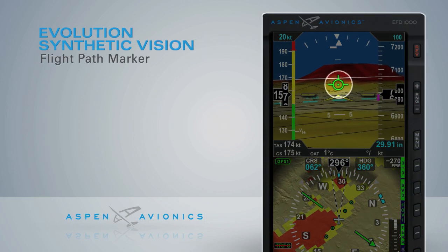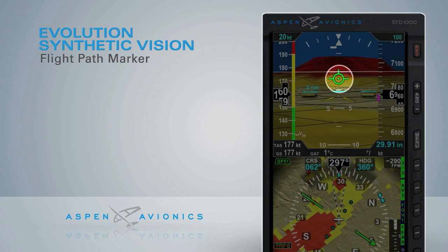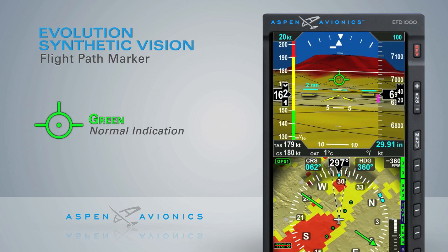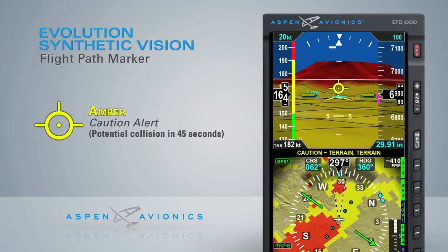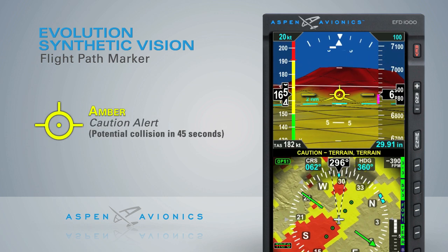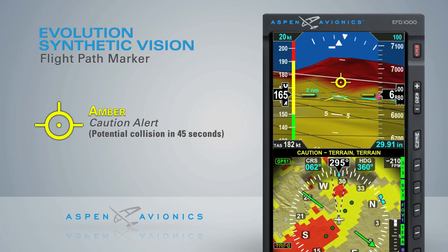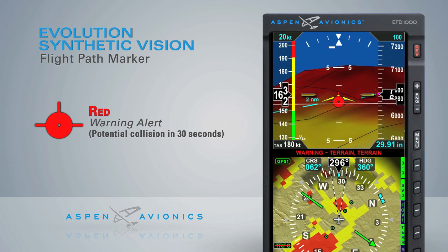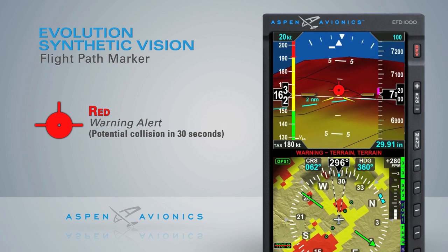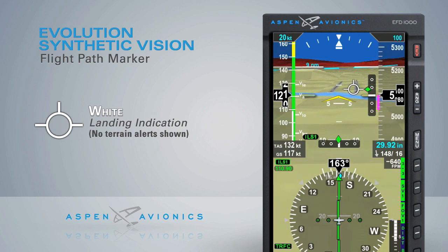The flight path marker's shape and color change to provide an immediate visual cue whenever an alert is generated. A green flight path marker is the normal depiction. Amber indicates a caution alert — a potential terrain or obstacle collision within 45 seconds if the current flight path is maintained. Red indicates a warning alert and potential collision within 30 seconds. When approaching an airport for landing, the flight path marker will be white and won't show colored terrain alerts.